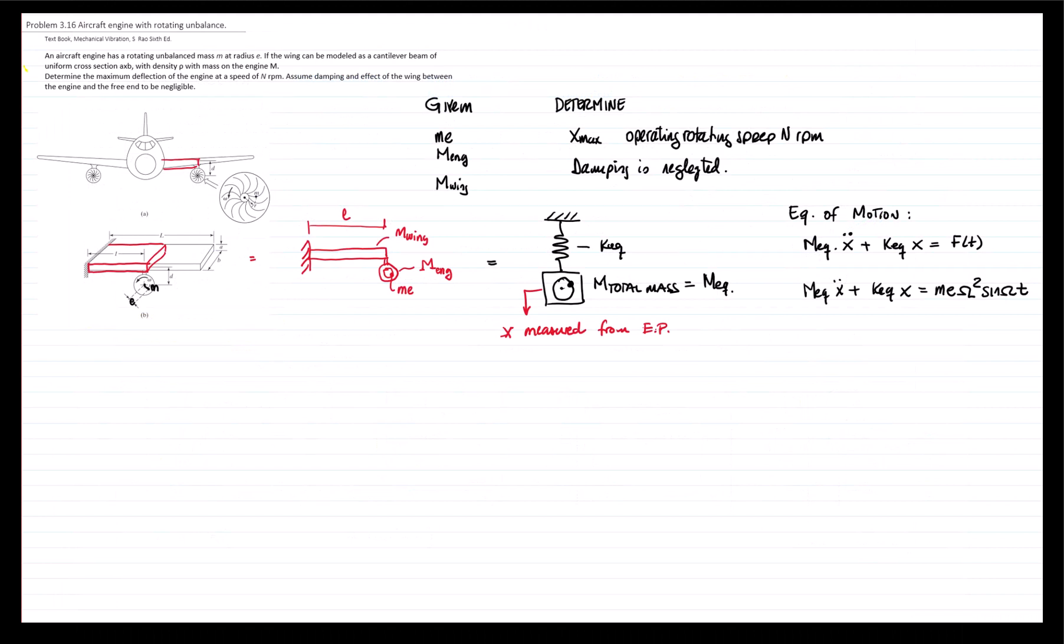Coming back to our problem, we want to calculate the equivalent mass. For that we have a cantilever beam with mass. The mass of the wing, we are given the density and dimensions. So we know that the mass is density times volume. The density is given and the volume will be the dimensions. This is b, this is a, and this is the length of our beam. So that will be a times b times the length. We can write it as rho abl. That's the mass of the wing.